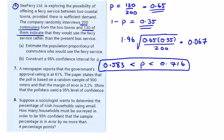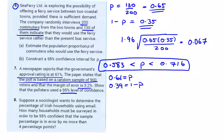A newspaper reports that the government's approval rating is 61%, so 0.61 equals p and 0.39 equals 1 minus p. The paper states that the poll is based on a random sample of 900 voters and that the margin of error is 3.2%. Show that the pollsters used a 95% level of confidence.